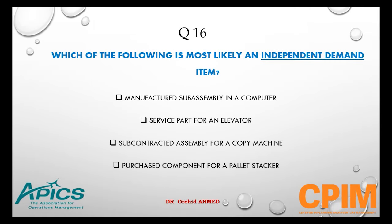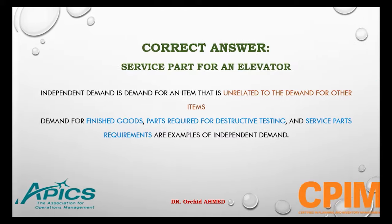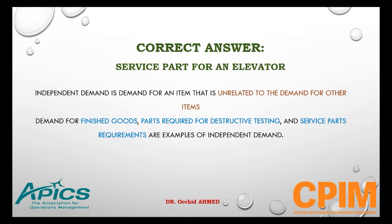Question number 16. Which of the following is most likely an independent demand item? Options: manufacturing subassembly in a computer, service part for an elevator, subcontracted assembly for a copy machine, or purchased component for a pallet stacker. The right answer is service part for an elevator. Independent demand is demand for an item unrelated to other items — finished goods, parts for destructive testing, and service parts are examples.